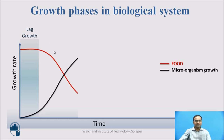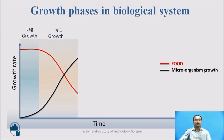In the secondary phase, slowly the food is going to decline. Why? Because this food will be consumed by microorganisms, and simultaneously the growth of microorganisms will increase much faster. Such a phase we call log growth.